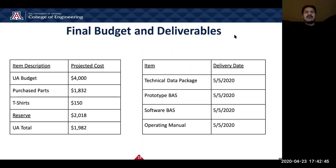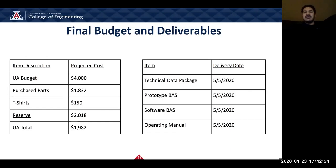Here we have our budget and deliverables. We have a budget of $4,000 and we have used $1,982. Our deliverables are all due on May 5th.